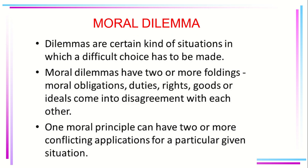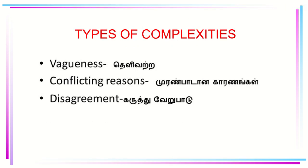Moral dilemmas have two or more obligations, duties, rights, goods, or ideals that come into disagreement with each other. One moral principle can have two or more conflicting applications for a particular situation. There are three types of complexities: vagueness, conflicting reasons, and disagreement. Disagreement means when more than one person is involved in a suggestion or decision — they cannot reach a particular point, and there will be differing and conflicting opinions. In Tamil: vagueness is 'Telivatra', conflicting reasons is 'Moranbadanakkaranagal', and disagreement is 'Karthuverubadu'.